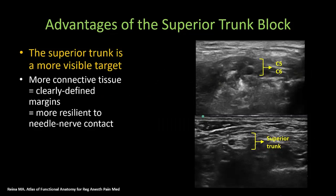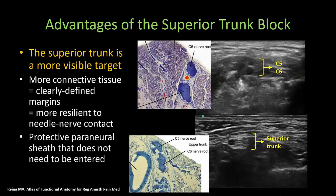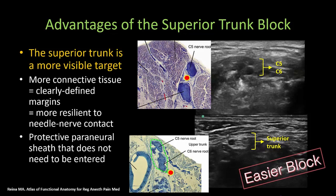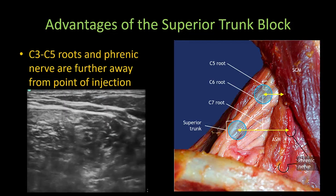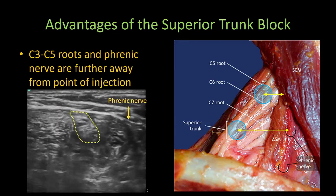The connective tissue around the superior trunk should also make it more resilient to needle-nerve contact, which may reduce the risk of mechanical nerve injury. Unlike in the intrafascial approach to the conventional interscalene block, the paraneural sheath around the superior trunk does not have to be breached or entered to perform the block. All of this translates into ease of performance. A very important advantage is that the C3 to C5 roots and the phrenic nerve are significantly further away from the site of injection. This video shows how the phrenic nerve slides medially away from the plexus over the anterior scalene muscle as we descend to the superior trunk level.